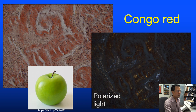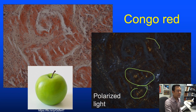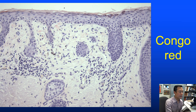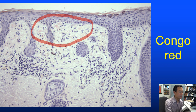Here's the Congo red positive stain, and under polarized light we see what could be described as apple green—though I've seen this sometimes in regular collagen fibers. Here's the Congo red stain on a case of macular amyloid; there's some weak staining in the upper dermis, but if it's not staining well or is negative, I won't rule out macular amyloid—it's pretty much an H&E call.